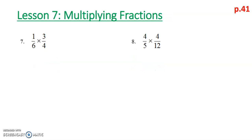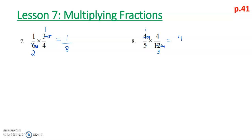For question 7, we can cross-reduce by dividing by 3: 3 divided by 3 is 1, and 6 divided by 3 is 2. For 4 and 1, there's nothing to cancel. Multiply: 1 times 1 is 1 for the numerator, and 2 times 4 is 8 for the denominator. For number 8, 5 and 4 cannot be cross-cancelled, but 4 and 12 can — divide by 4 gives 1 and 3. So 1 times 4 is 4, and 5 times 3 is 15.